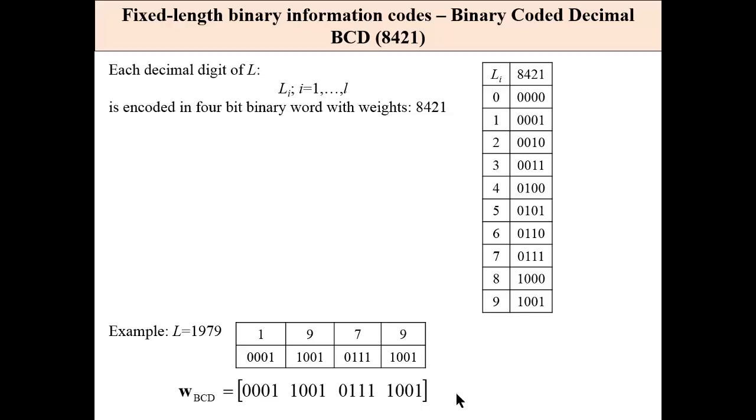Another binary code is binary coded decimal, BCD. Each decimal digit of the number L is encoded in four binary words with weights 8, 4, 2, 1. So zero is 0000, nine is 1001.